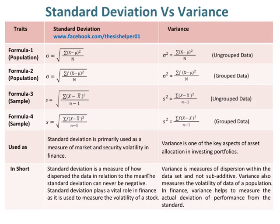The Formula 1 of standard deviation and variance regarding population for ungrouped data are given for comparison. The Formula 2 of standard deviation and variance regarding sample for ungrouped data are given for comparison. The Formula 4 of standard deviation and variance regarding sample for ungrouped data are given for comparison.